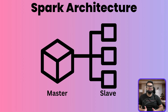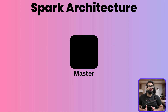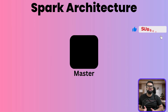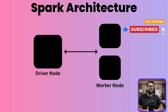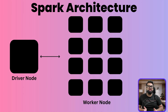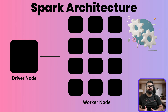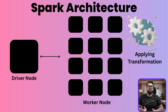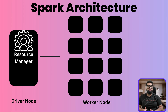Before diving into the code, let's look at the hardware. Spark operates on a cluster of computers using a master-slave architecture. The master node, or driver node, is the brain of the operation — a single machine that orchestrates the entire job. Worker nodes, or slave nodes, are the workhorse; you can have dozens or even thousands of these machines. They perform the actual computation: reading data, applying transformations, and storing results. A resource manager like YARN or Kubernetes runs on the driver node and manages how resources on the worker machines are allocated.